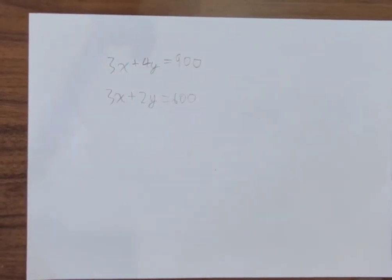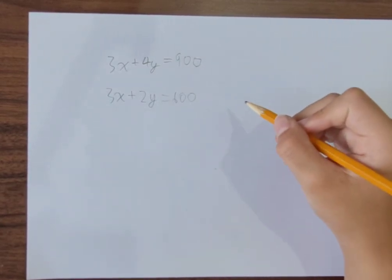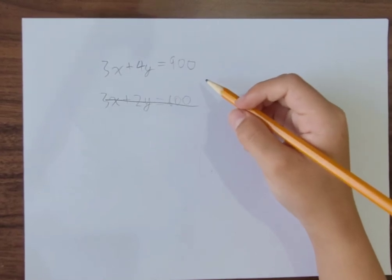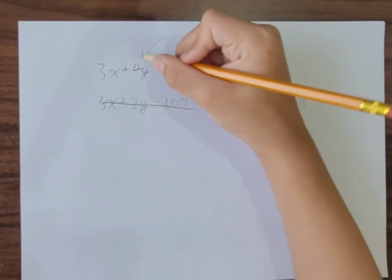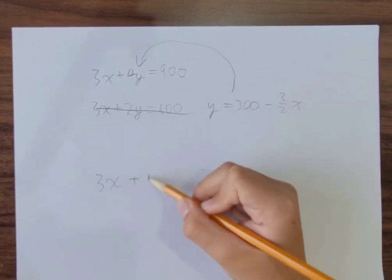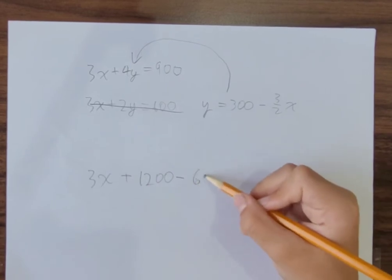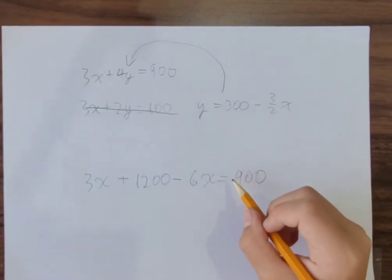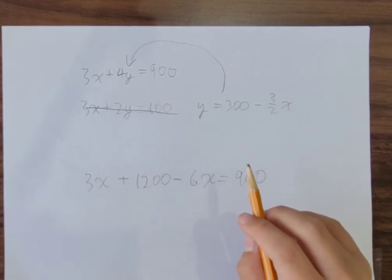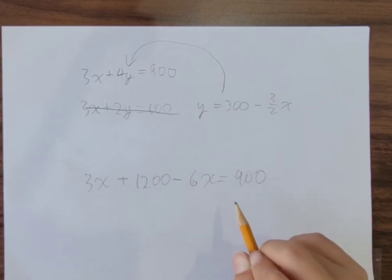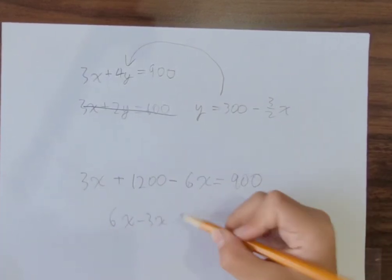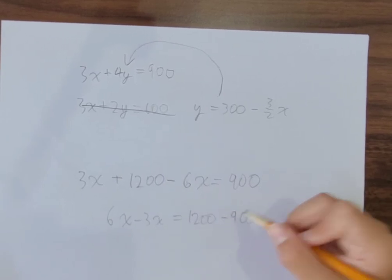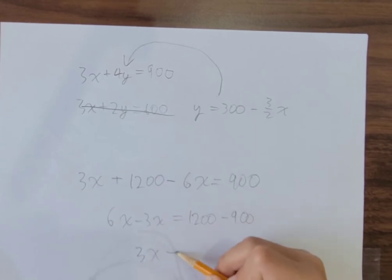So I found a mistake in my problem. Let's do an easier way. Let's find out what Y is. Y is equal to 300 minus 3 halves X. Let's put this into this equation. So 3X plus 1200 minus 6X equals 900. Working through it, 6X minus 3X equals 300. So 3X equals 300.